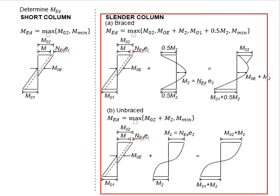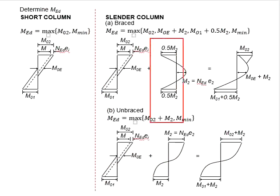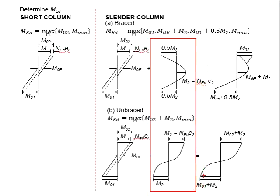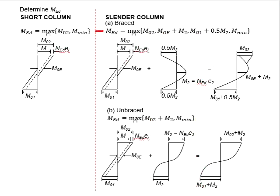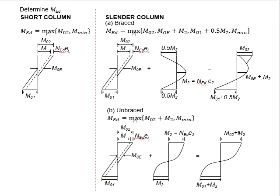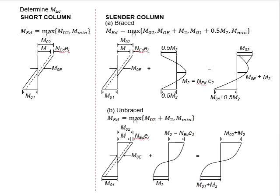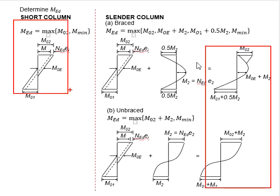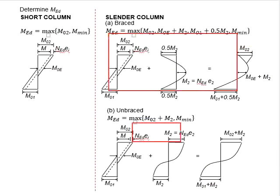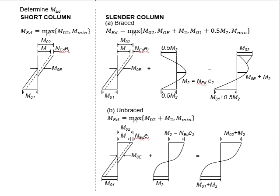Now we look at the slender column. The main difference between slender columns and short columns is that there will be a second order moment caused by the buckling response of the columns. The first diagram for slender columns is totally identical to the diagram for short columns. However, due to the superposition of the buckling response of the slender column, the design moments acting on the columns differ from the short columns, mainly due to the difference in terms of braced and unbraced conditions.